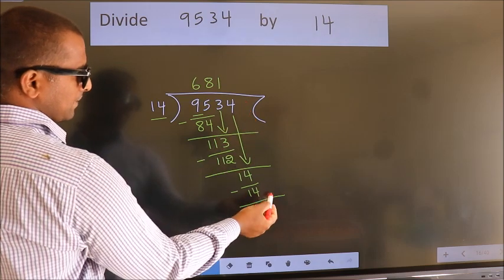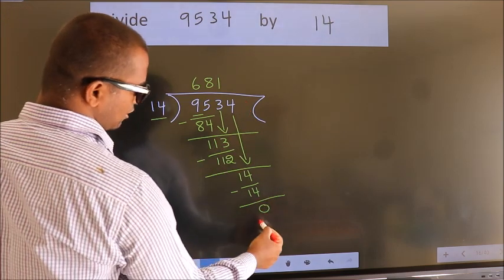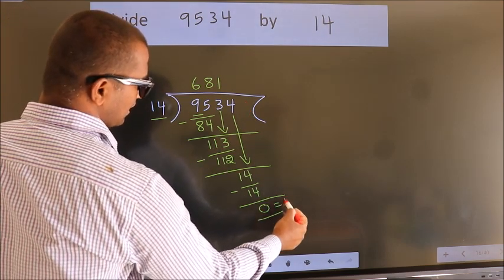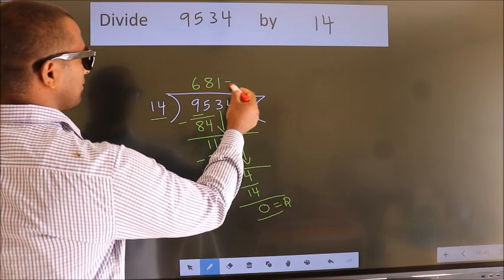No more numbers to bring it down. So we stop here. This is our remainder. This is our quotient.